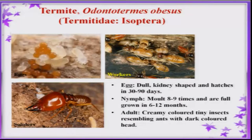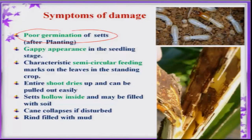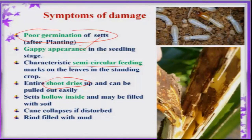Another pest is termite, which occurs in patches. Whenever sugarcane is grown in red and sandy soils, a lot of problem from termites is seen. Since it occurs at the planting stage, poor germination of the sets is commonly seen, and because of this poor germination gap appearance is common. Termites feed characteristically in a semicircular manner. Drying of shoots is also seen, and the termites fill up the hollow cane with organic matter or soil.